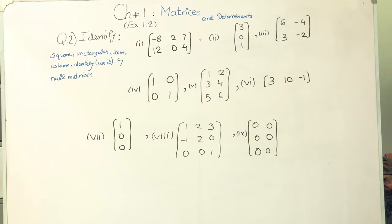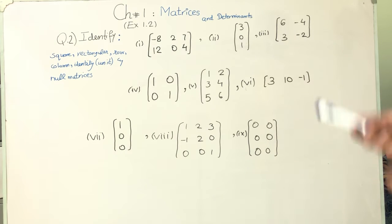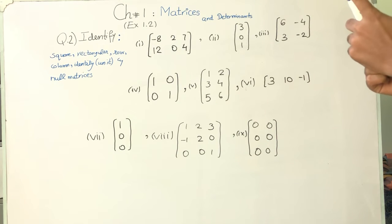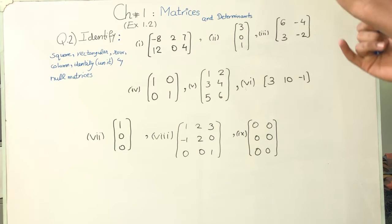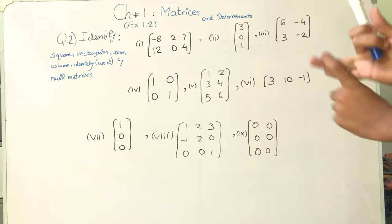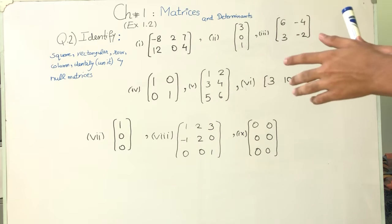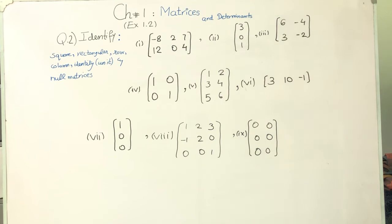Bismillah ar-Rahman ar-Rahim. Today we will start with Exercise 1.2, question number 2. This is Chapter 1, Matrices and Determinants, Math Class 9. Today we will solve this question: from the following matrices, identify square matrices, rectangular matrices, row matrices, column matrices, identity matrices, and null matrices. We have 9 matrices given and we will determine the type of each.